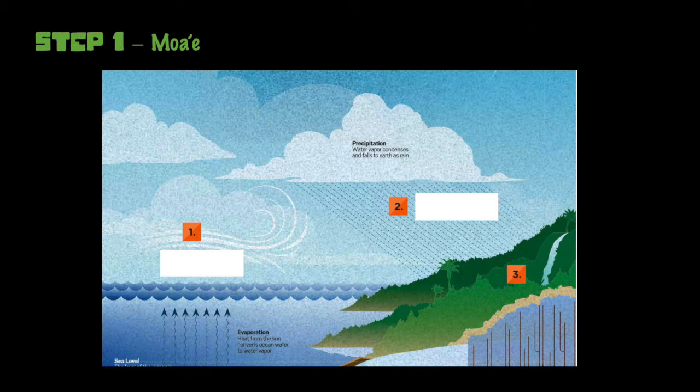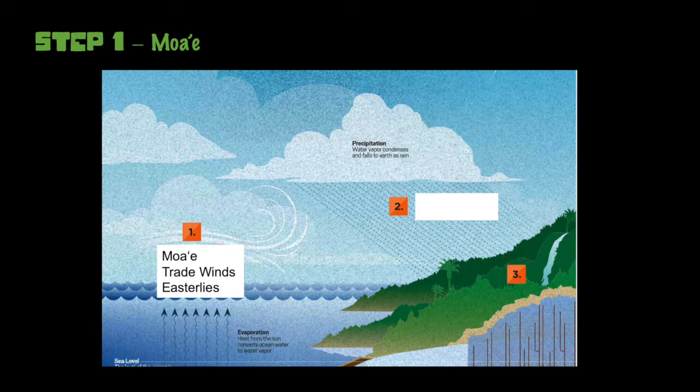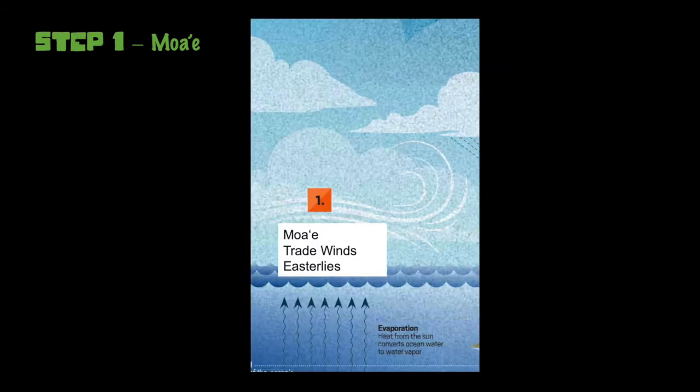Step one is Moa'e, or trade winds, or easterlies. Moa'e are winds that come from the northeast, hence the English name easterlies. These are our prevailing winds here in Hawaii, meaning they are blowing most of the time. Another common name for these winds is trade winds, a term that comes from European sailors in the 16th to 19th centuries. Moa'e are an important part of how we get our water here in Hawaii because they push moist air, created by evaporation of ocean water, over our high cool mountains.